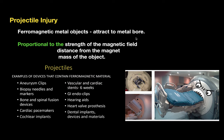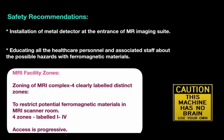Regarding projectile injury, ferromagnetic metal objects can be attracted toward the magnet bore. The risk depends on the strength of the magnetic field, distance from the magnet, and mass of the object. Potential projectiles include aneurysmal clips, biopsy needles and markers, bone and spinal fusion devices, cardiac pacemakers, cochlear implants, vascular and cardiac stents implanted within six weeks, GI endoclips, hearing aids, heart valve prostheses, and dental implants.